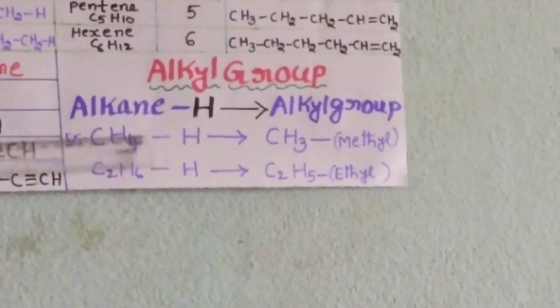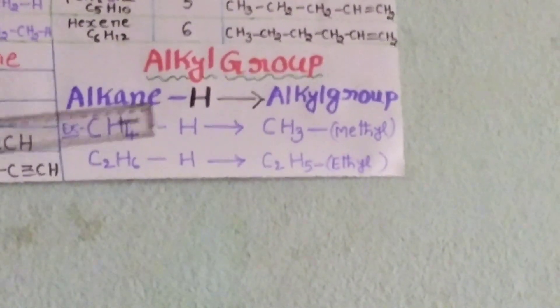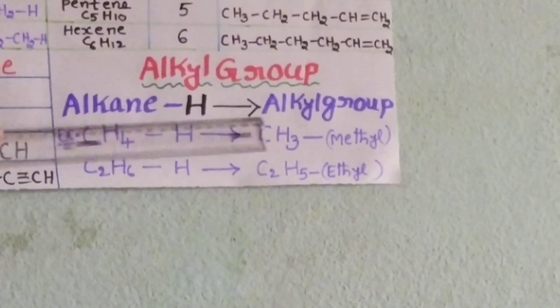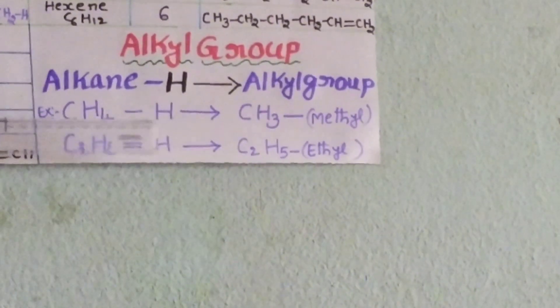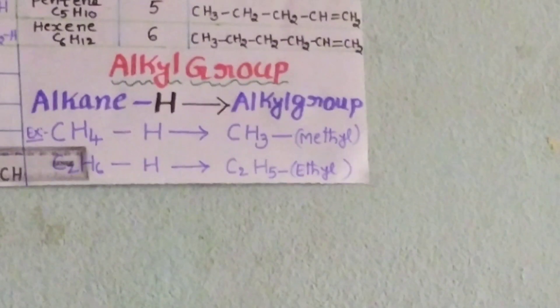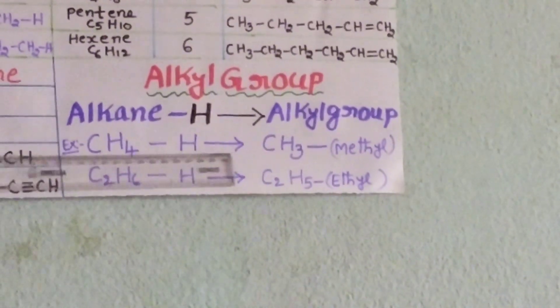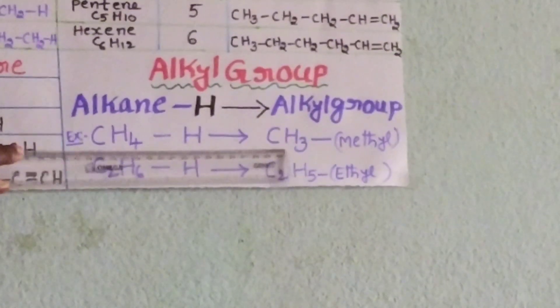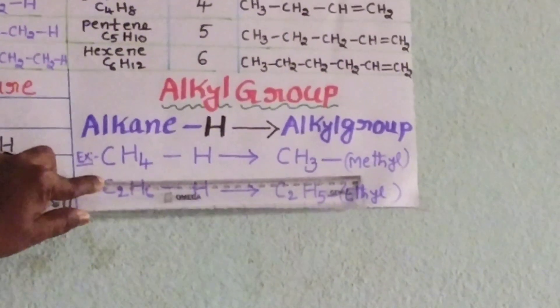Now we discuss one more topic: the alkyl group. What is meant by an alkyl group? If you take any one of the alkanes and remove one hydrogen, the resultant structure is named as an alkyl group. For example, methane has molecular formula CH4. If we remove one hydrogen from methane, the resultant structure is CH3–, which we name as the methyl group.